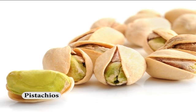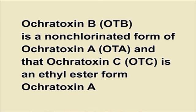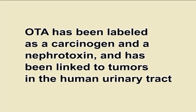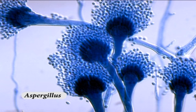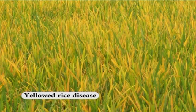Major groups of mycotoxins. Aflatoxins are largely associated with cotton, peanuts, spices, pistachios and maize. Ochratoxin is a mycotoxin that comes in three secondary metabolite forms — A, B and C — all produced by Penicillium and Aspergillus species. Ochratoxin B (OTB) is a non-chlorinated form of Ochratoxin A (OTA), and Ochratoxin C (OTC) is an ethyl ester form of OTA. OTA has been labeled as a carcinogen and nephrotoxin and linked to tumors in the human urinary tract. Citrinin was first isolated from Penicillium citrinum and has been identified in over a dozen Penicillium species and several Aspergillus species; it is associated with yellowed rice disease in Japan and acts as a nephrotoxin in all animal species tested.